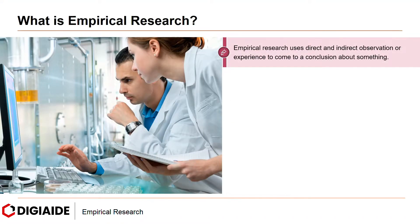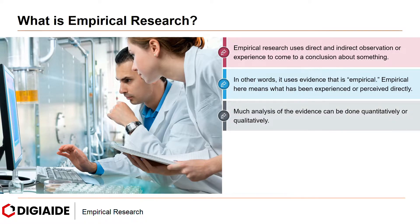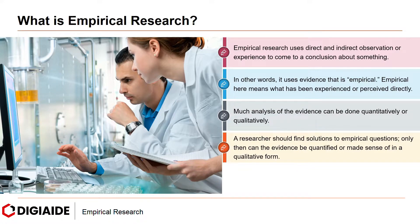Empirical Research uses direct and indirect observation or experience to come to a conclusion about something. In other words, it uses evidence that is empirical. Empirical here means what has been experienced or perceived directly. The evidence can be quantified or qualified. Much analysis of the evidence can be done quantitatively or qualitatively. A researcher should find solutions to empirical questions. Only then can the evidence be quantified or made sense of in a qualitative form.